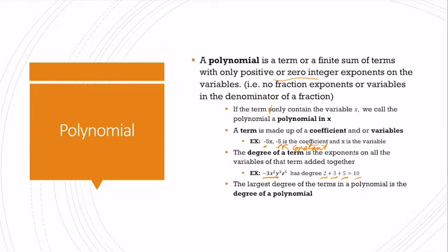The largest degree of the terms in a polynomial is the degree of a polynomial. So for example, if I had 5x squared plus 4x to the fifth plus 7, this would be a degree 5 polynomial.